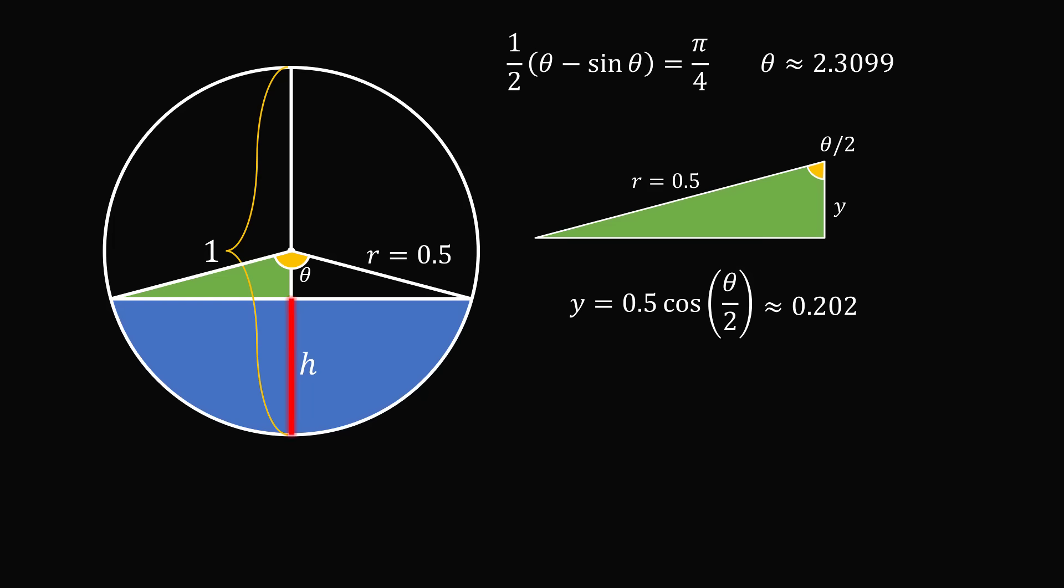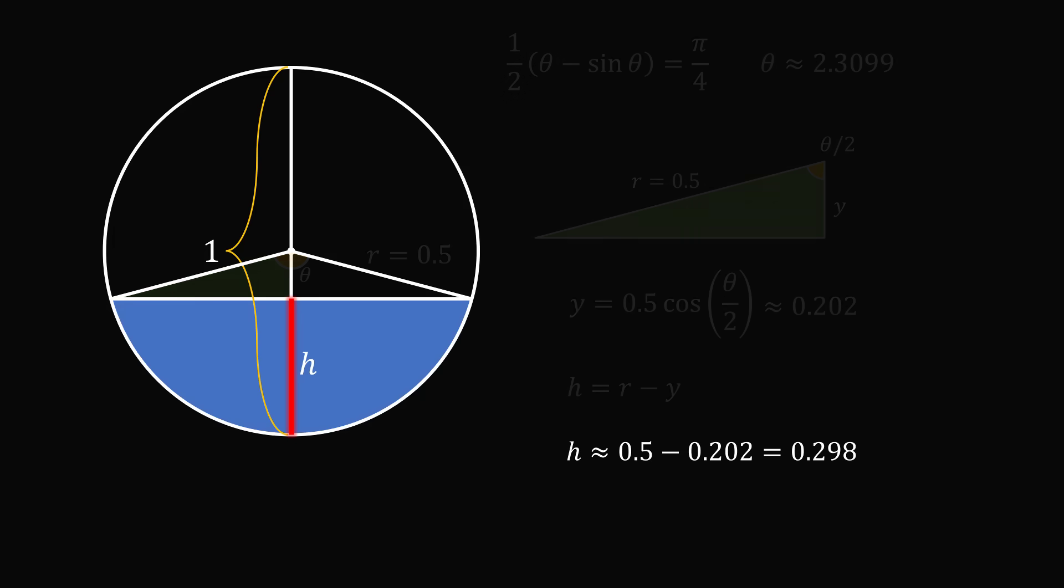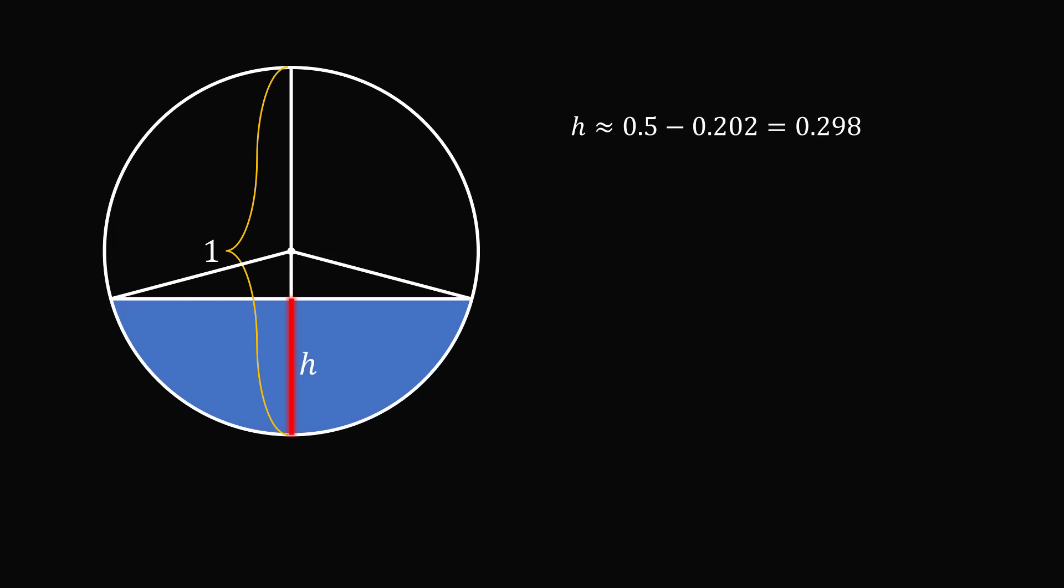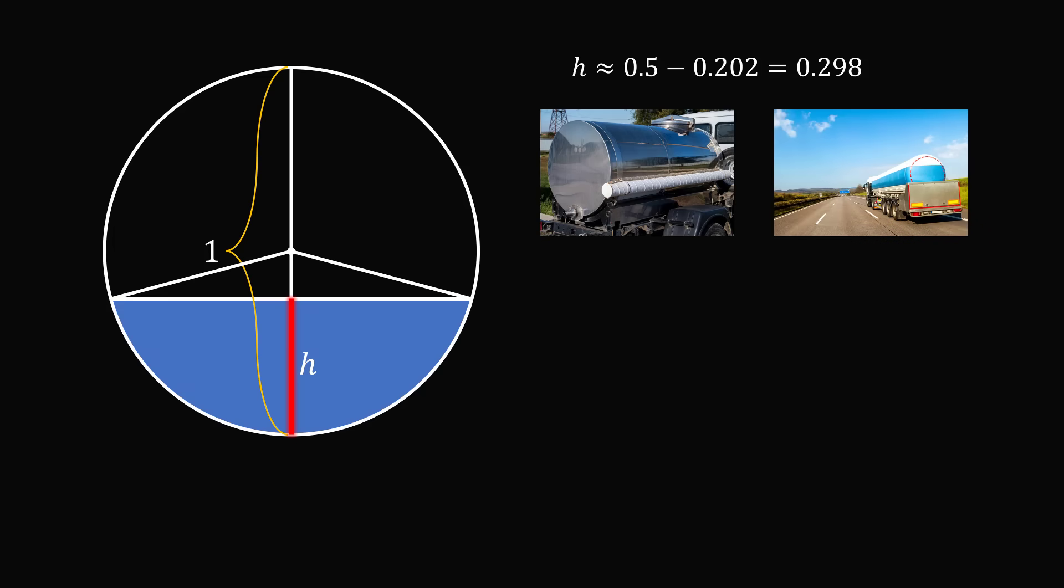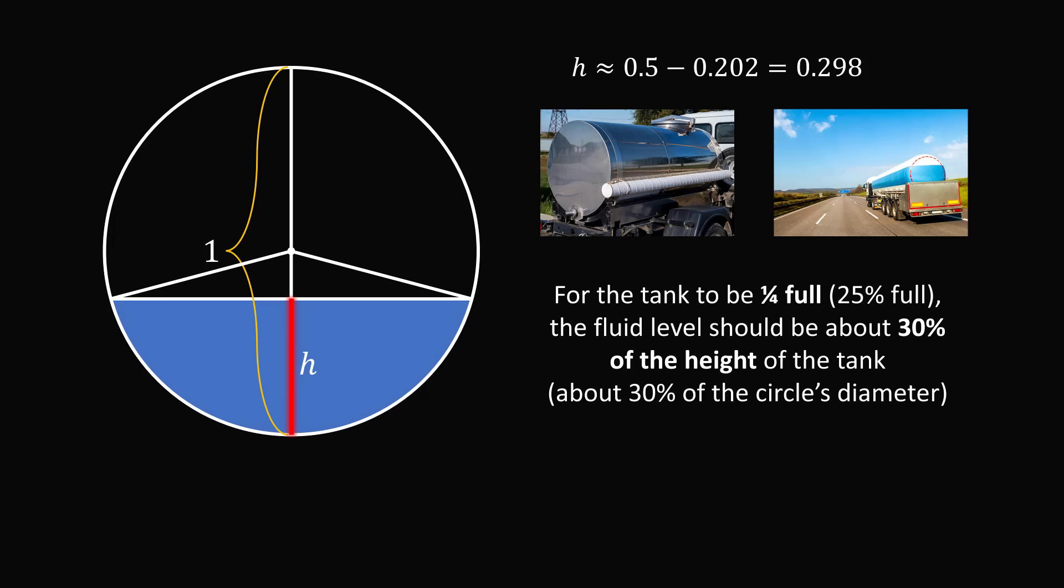Then, h will be equal to the radius of this circle minus y. So, h is equal to r minus y. We substitute in, and we get that h is approximately equal to 0.298. So, that's the answer to the question. Let me just translate it back into practical terms. So, if you have a cylindrical tank that's on its side, in order to get the tank a quarter full, the fluid level should be about 30% of the height of the tank or about 30% of the circle's diameter. And that's the answer.